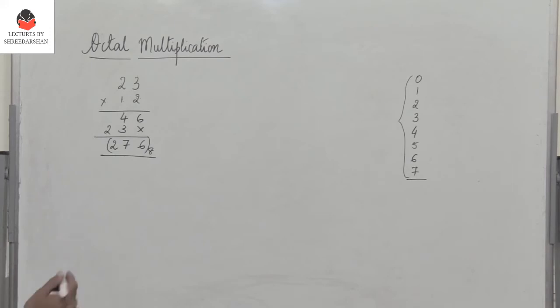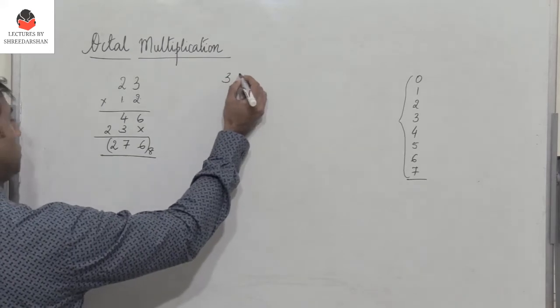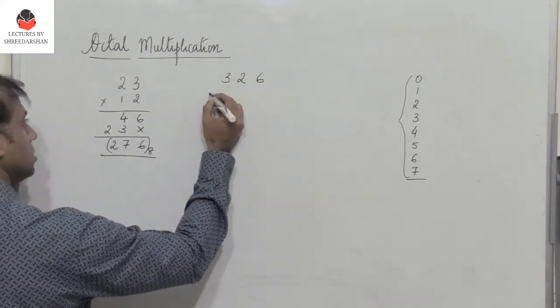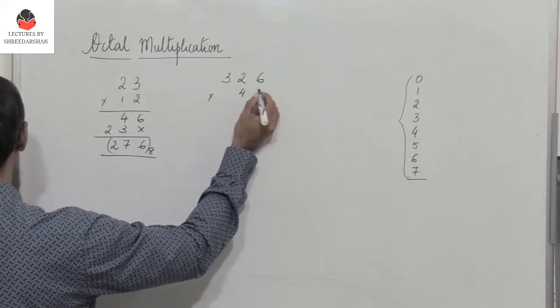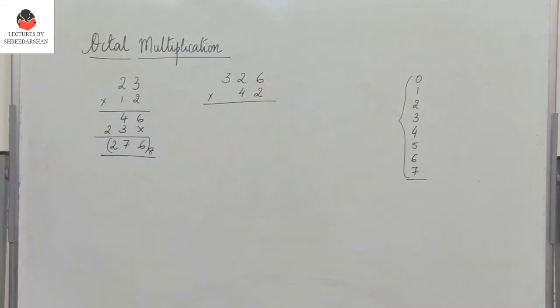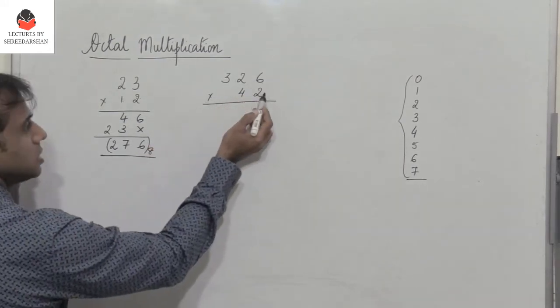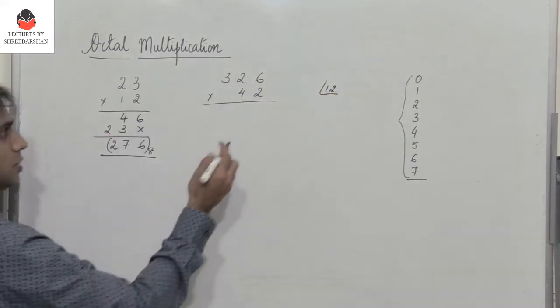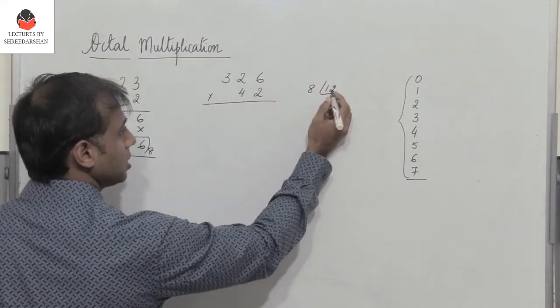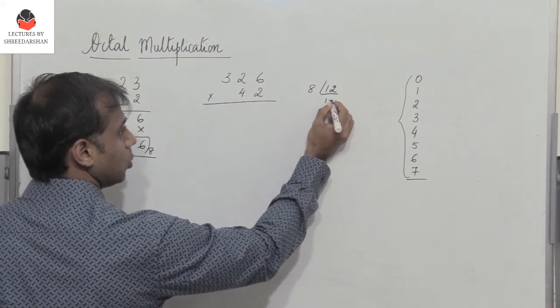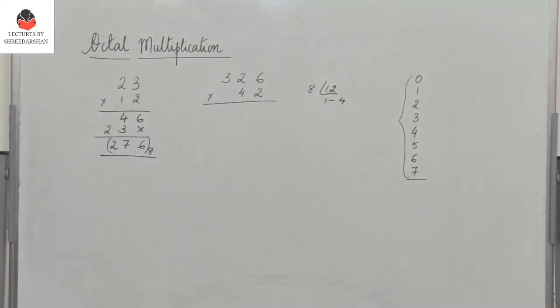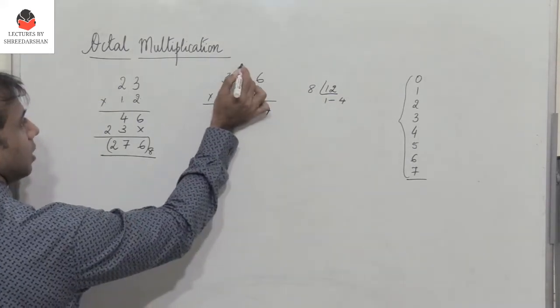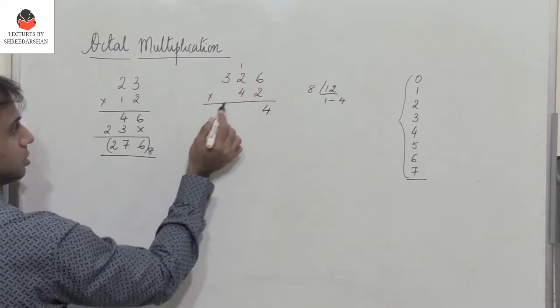Let's take another example. I need to multiply 326 into 42. So now what happens? So I have 6 into 2 which is 12. Now 12 is a number which is greater than 7, so convert it to octal format. So divided by 8, I get 14. So what do I do? I just write 4 and then I add 1 here.